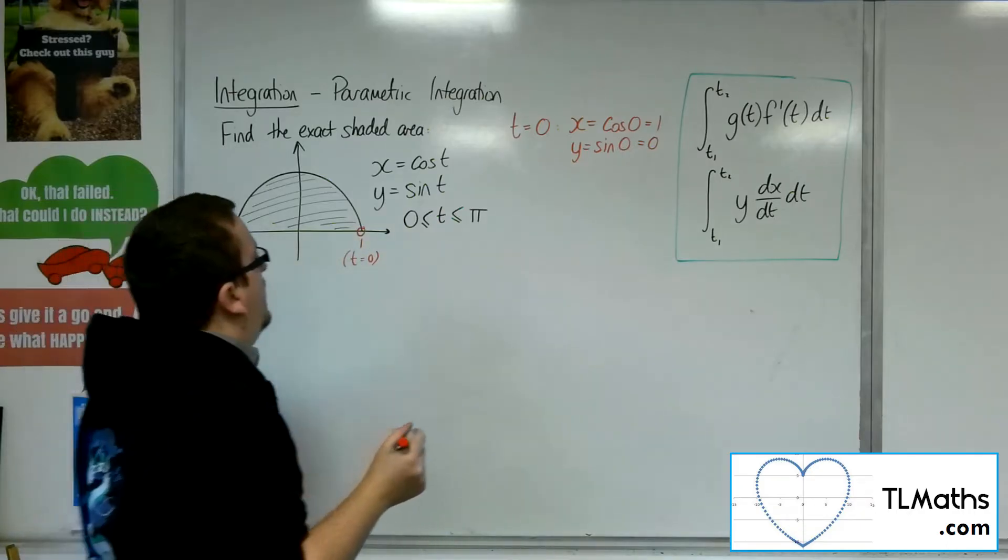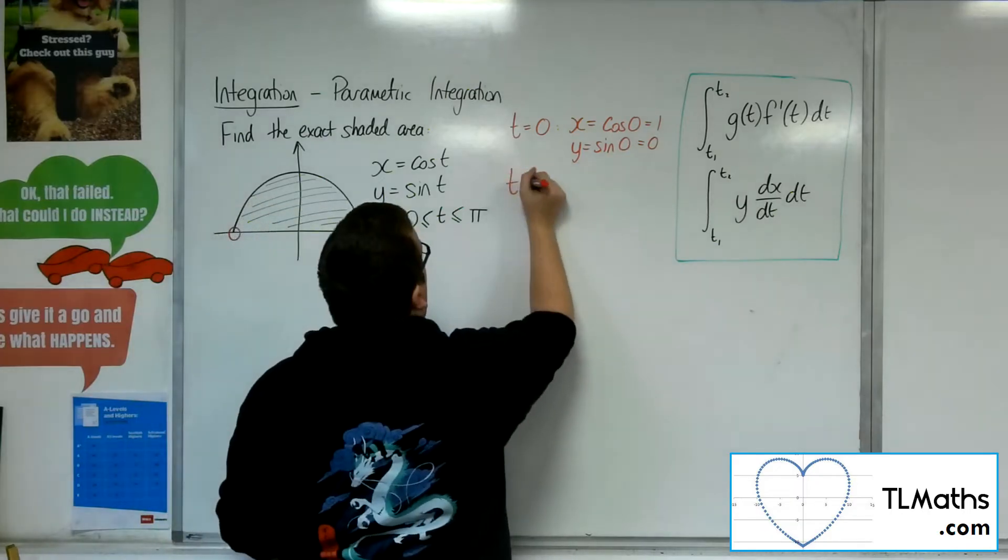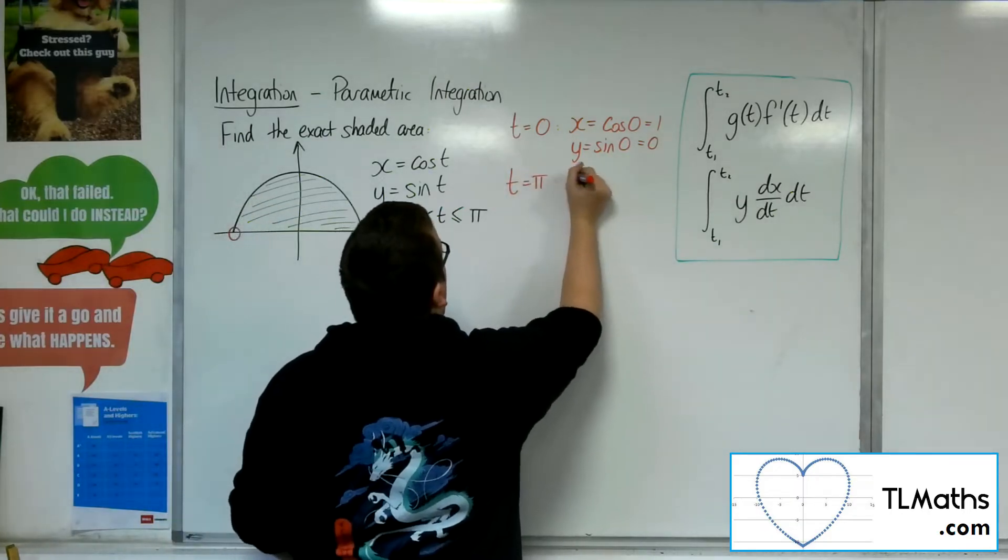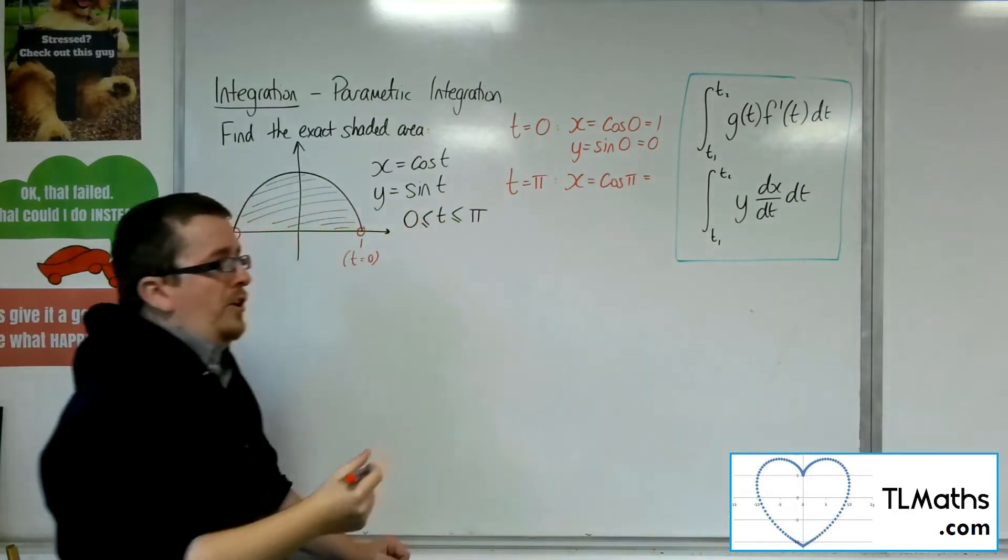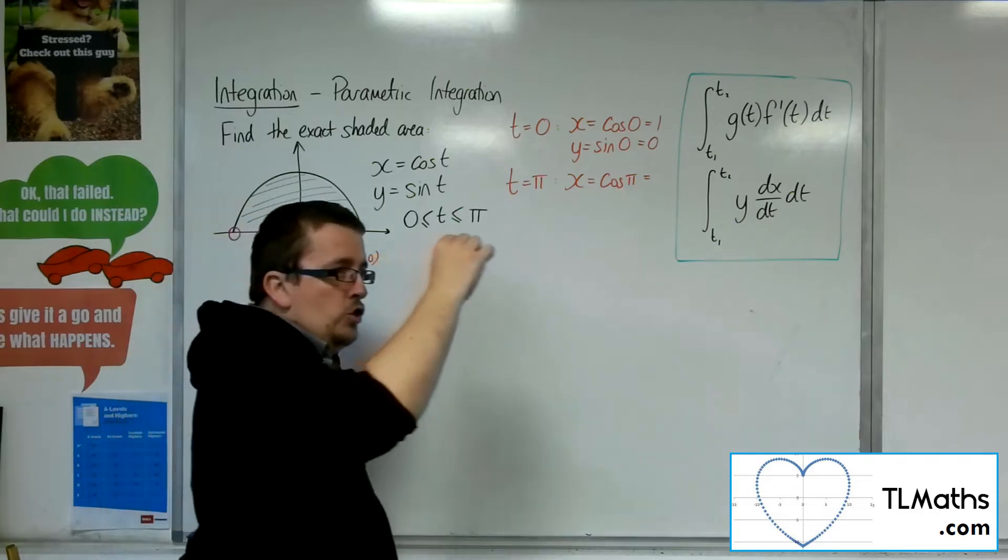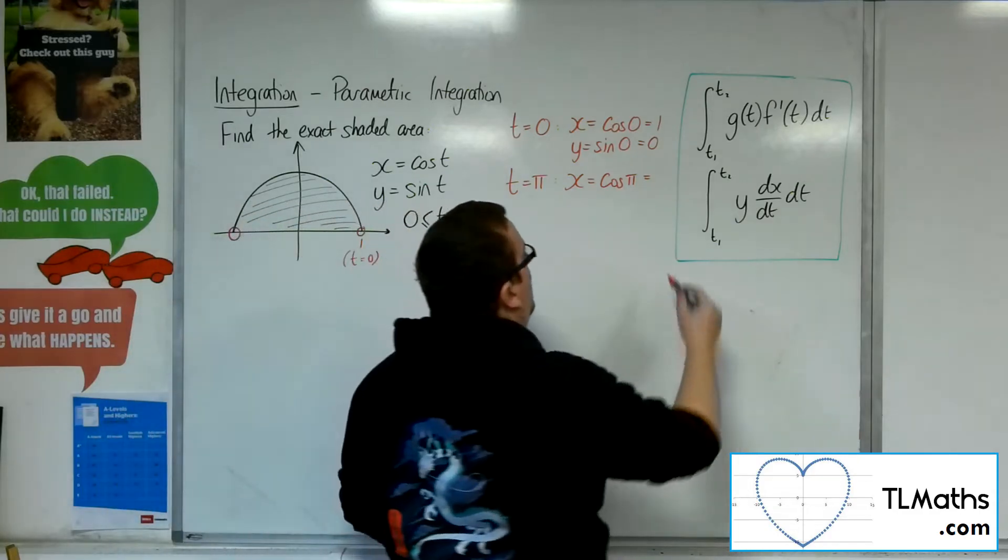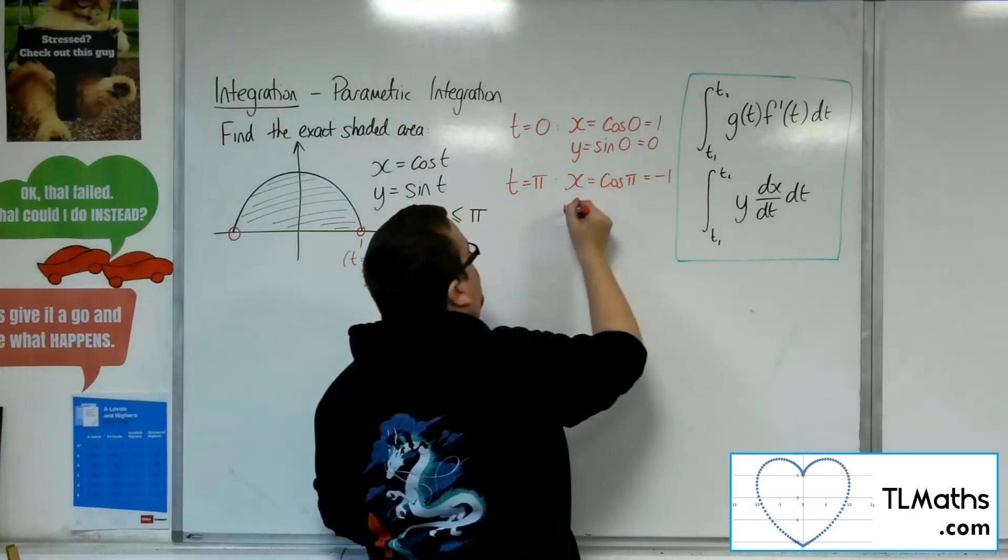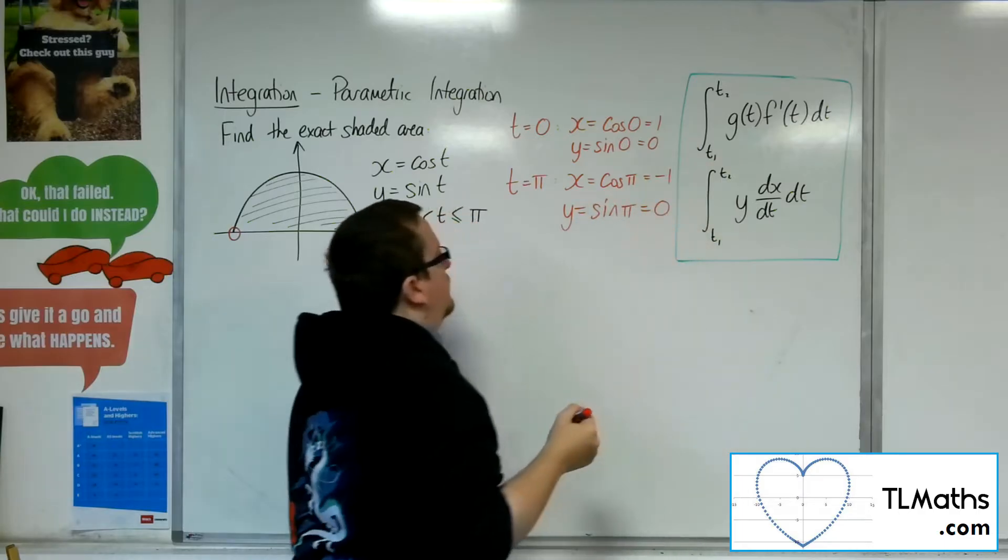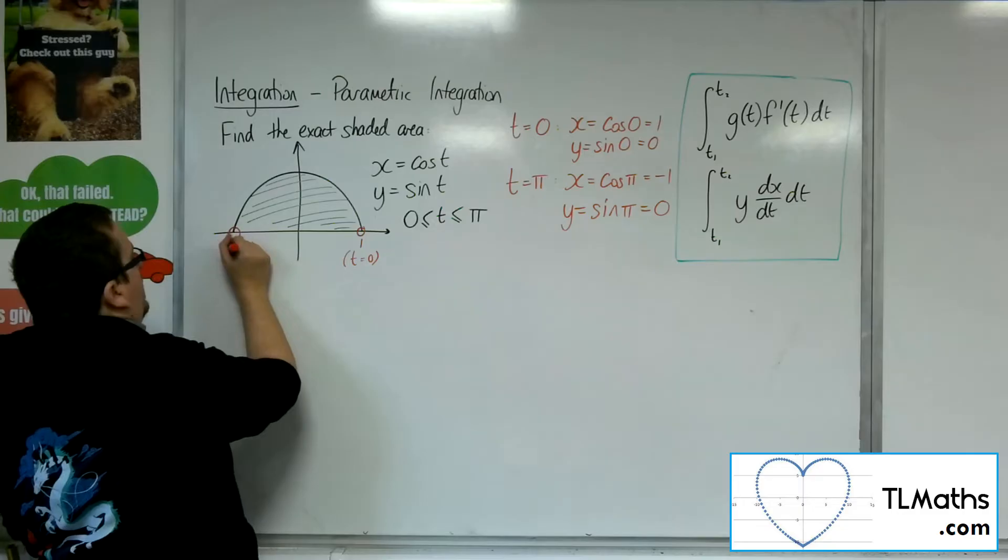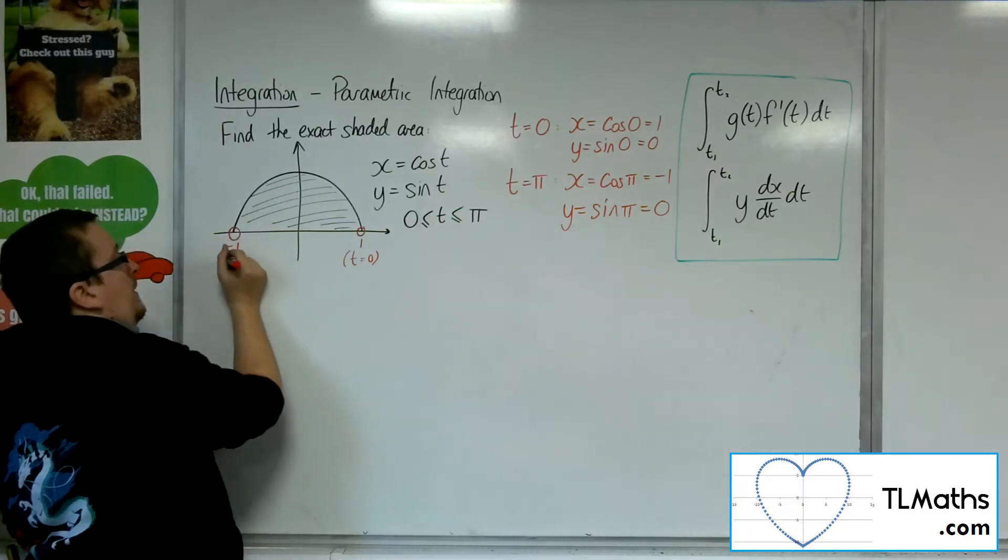Now, this point over here is going to be when t equals pi. So x is equal to cos of pi. Cosine of pi, thinking about how the curve is shaped, is minus 1. And y equals sine of pi, well, that's just 0. So this is minus 1, and that is when t equals pi.